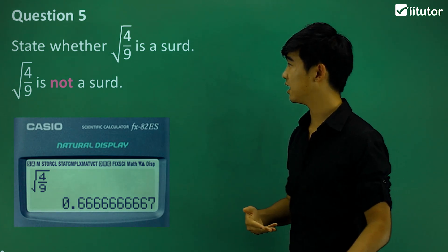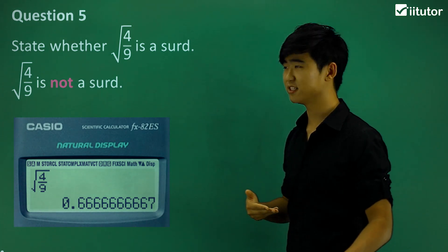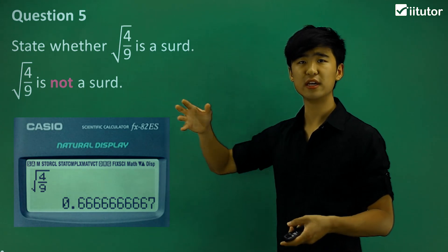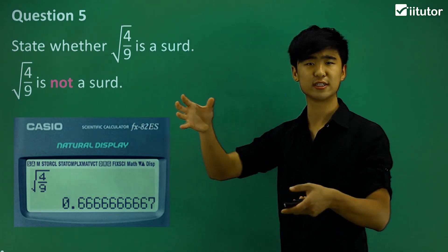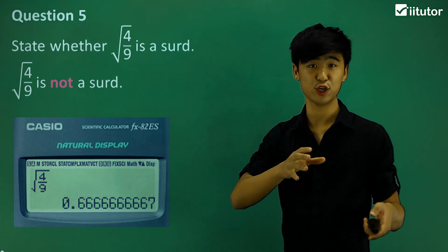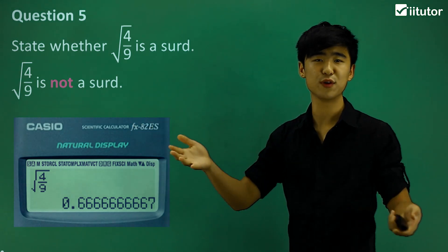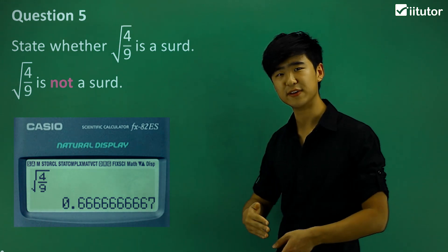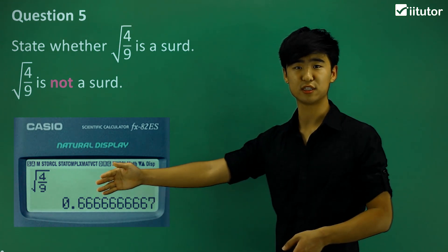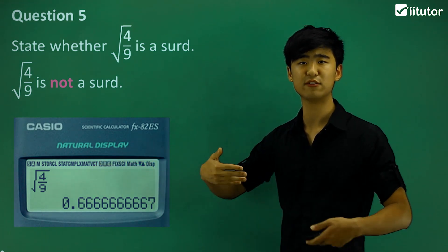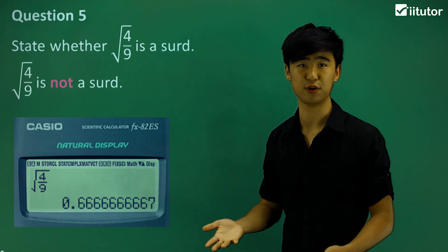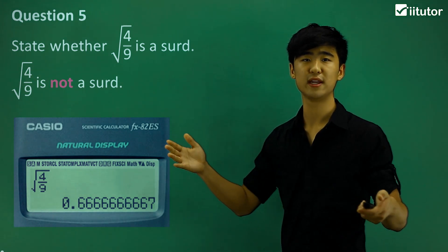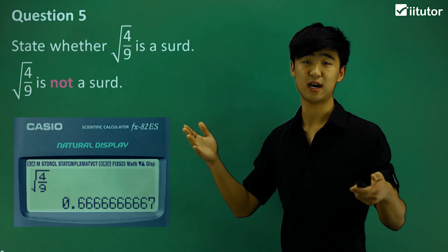This is how we understand — even if we're given a square root — is it a third or is it not a third? It's not always a third. So how do we know? We just put it into our calculator and see if it goes on forever, and if it does, does it have a specific pattern or not? If it doesn't have a specific pattern, then it is a third.